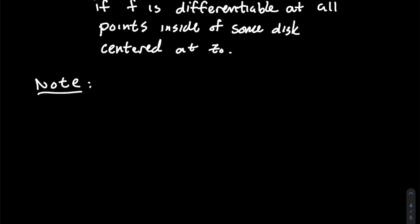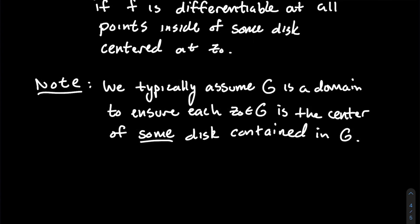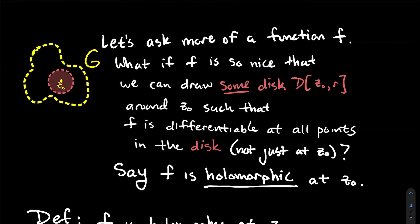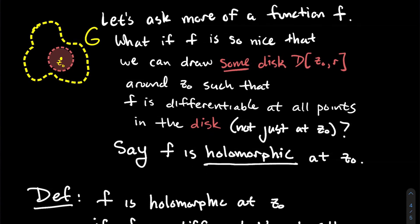Here's an important note: it matters that we assume G is a domain, because that ensures each point in G can be the center of some disk contained in G — that's the condition of being open. For any point inside an open set, you can find some disk centered at that point that stays in there. That sets the table for us to even consider whether a function is holomorphic.